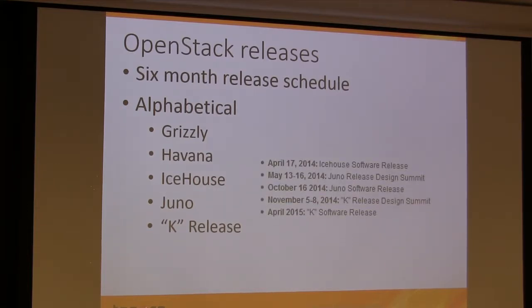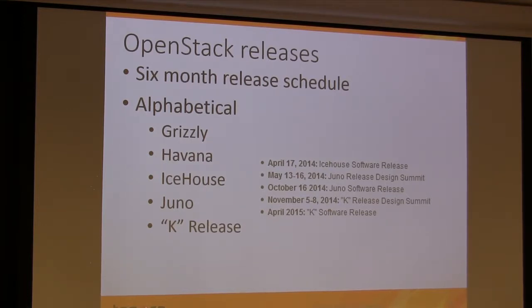Every six months there's a party somewhere in the world. We just came back from the one in Atlanta, which was in May. Juno is in October, and the K release whenever it shows up.